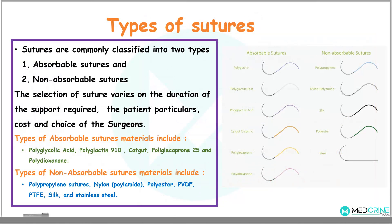How are suture materials classified? Sutures are commonly classified into two types: absorbable sutures and non-absorbable sutures. The selection of sutures varies depending on the duration of support required, the patient particulars, the cost of the suture materials, and the choice of surgeons.